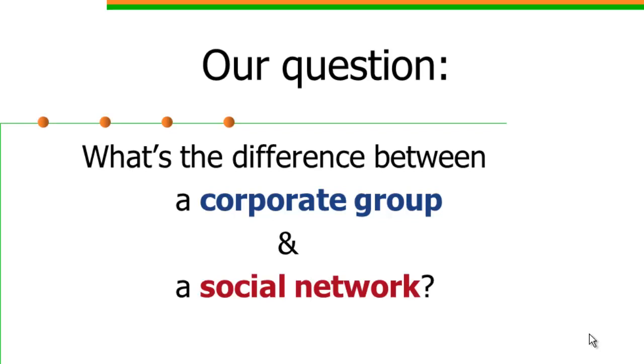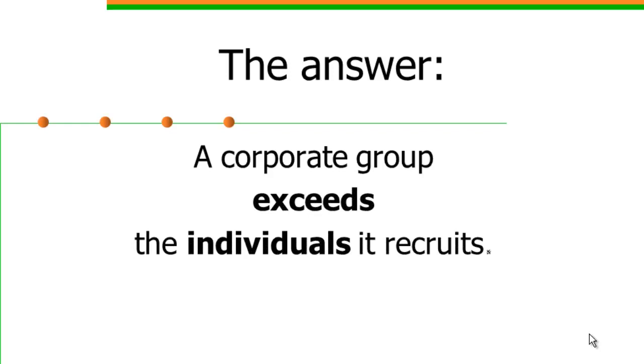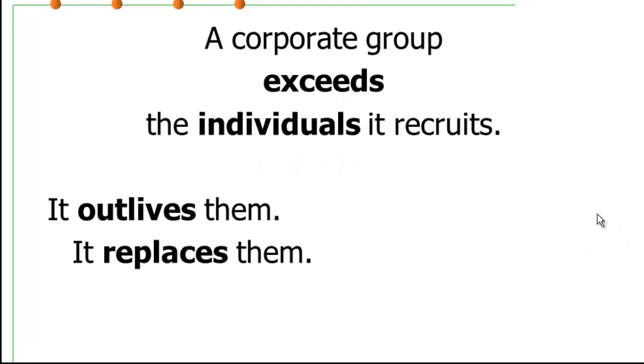And social networks used to be kind of hard to explain, but that was before MySpace and Facebook came along. So we'll start with corporate groups. And a corporate social group is defined by exceeding the individuals that it recruits. And this means that it can outlive them. It also means that it can replace them. So there's a distinction in a corporate social group between the individuals that it recruits into the group and the group itself.